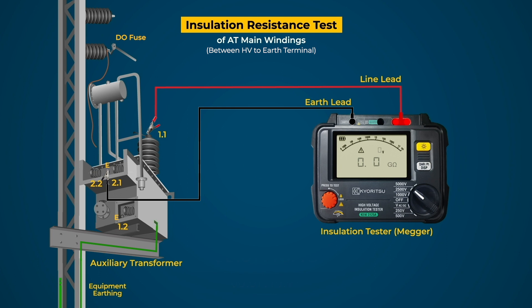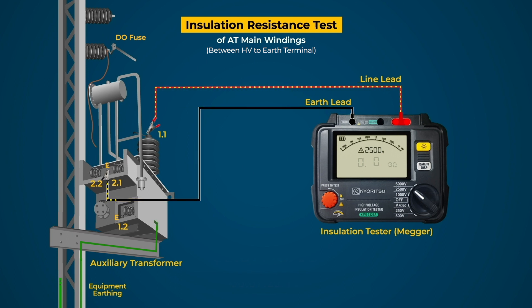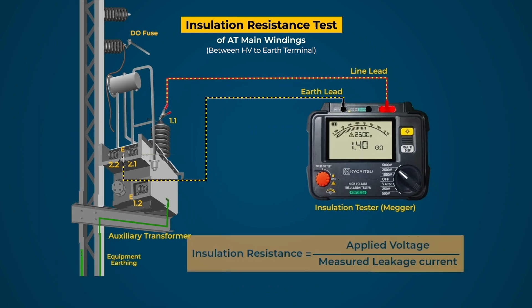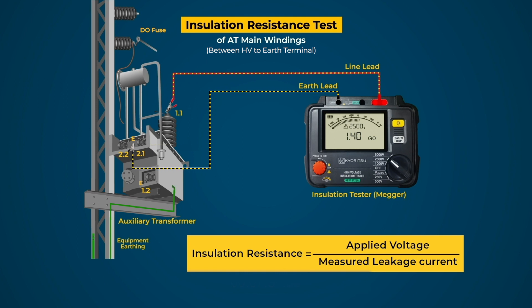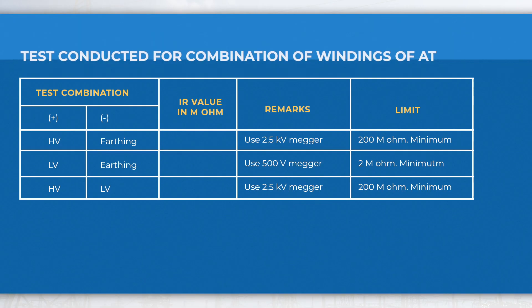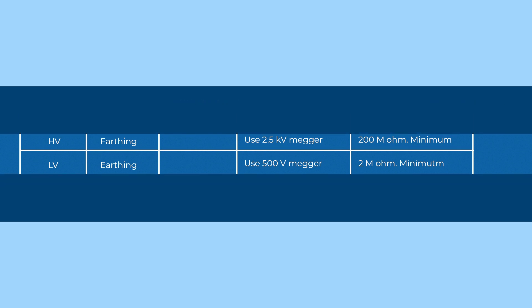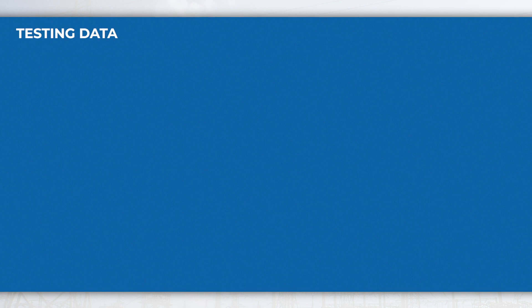On pressing the test button of the tester, 2.5 kV DC voltage is applied across HV and earthing. As a result, leakage current will flow in the circuit, and the tester will measure this leakage current and calculate the insulation resistance by the ratio of applied voltage and measured leakage current. The insulation resistance value may be noted from the display. The same test is to be conducted for the combination of windings as shown in the table. Testing data may be recorded in this format for further investigation and future reference.